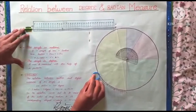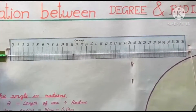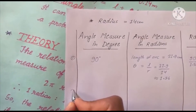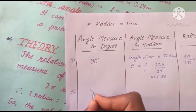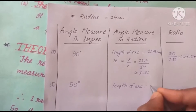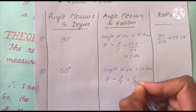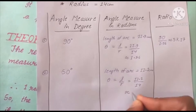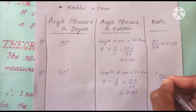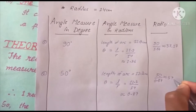Now we see the final reading of the spherical ball, which comes out to be approximately 12.2 cm. The angle in degrees is 50 degrees and the length of arc is approximately 12.2 cm. So theta in radians equals length of arc upon radius, which is 12.2 upon 14, approximately 0.87. The ratio of degree to radian measure is 50 divided by 0.87, which approximately comes to 57.37.